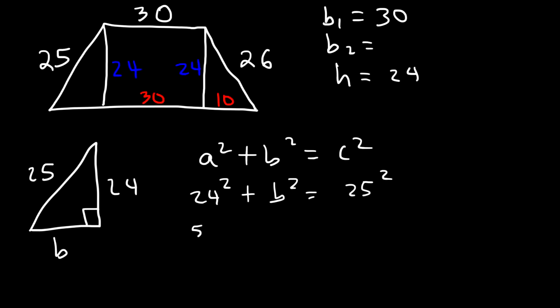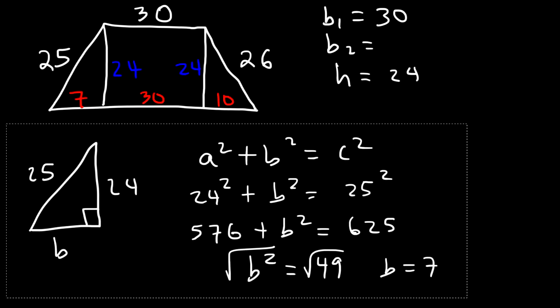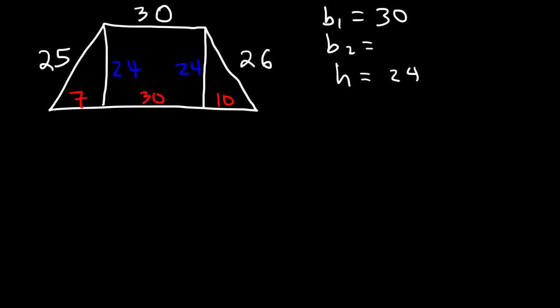24 squared is 576. 25 squared is 625. 625 minus 576, that's 49. And the square root of 49 is 7. So therefore, the base of the triangle on the left is 7 units long. So now b₂, which represents the total length of the second base, is going to be 30 plus 10 plus 7, which is 47.